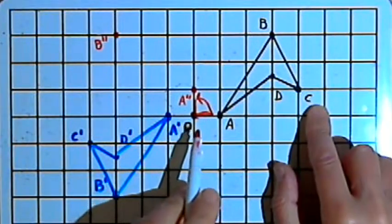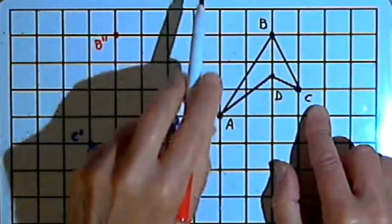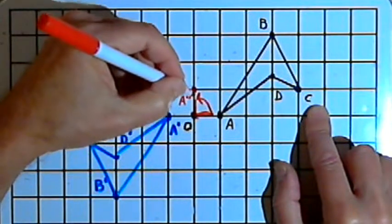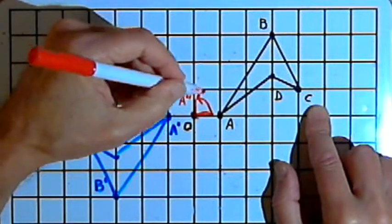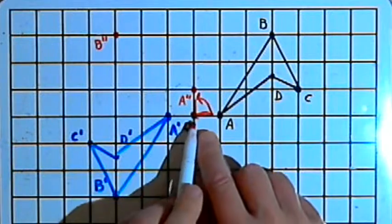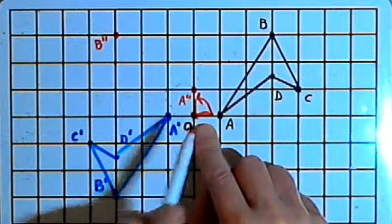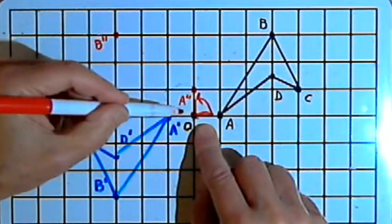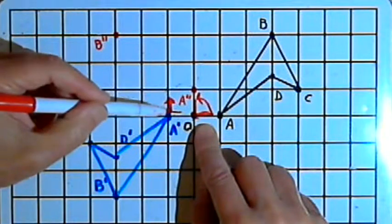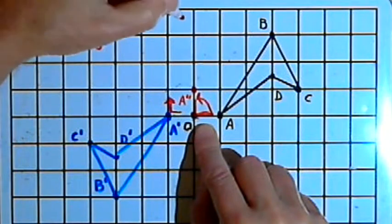To get to point C, I start at the center of rotation, face towards the top of the page, go forward one unit, make a right turn, and go forward four more units. So for C double prime, I go back to that center of rotation, turn 90 degrees counterclockwise, go forward one unit, then make a right turn, and go forward four units. That gets me to C double prime.